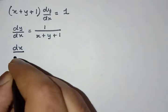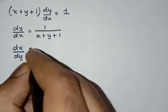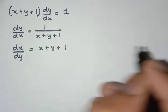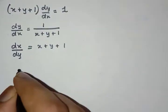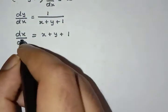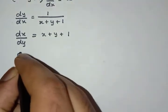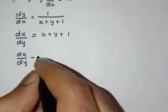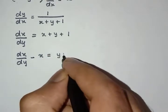Now, if we reciprocate it, we get dx/dy is equal to x plus y plus 1. If we take the x term to the other side, we get dx/dy minus x is equal to y plus 1.